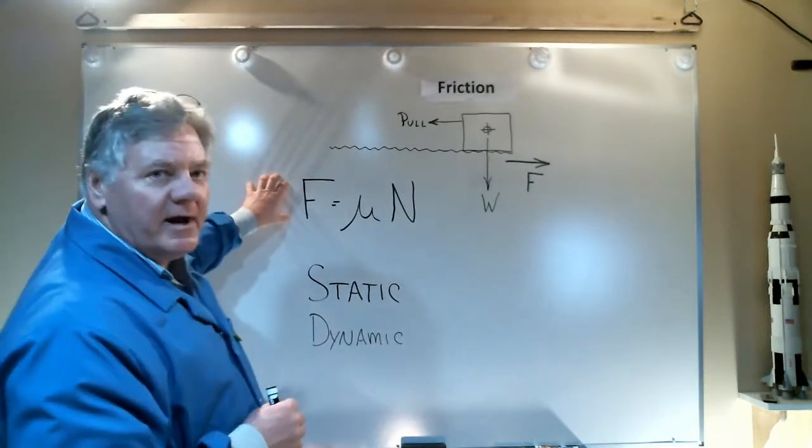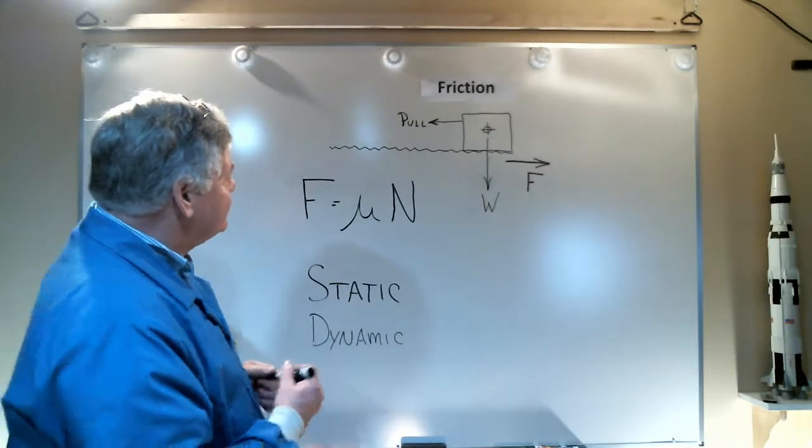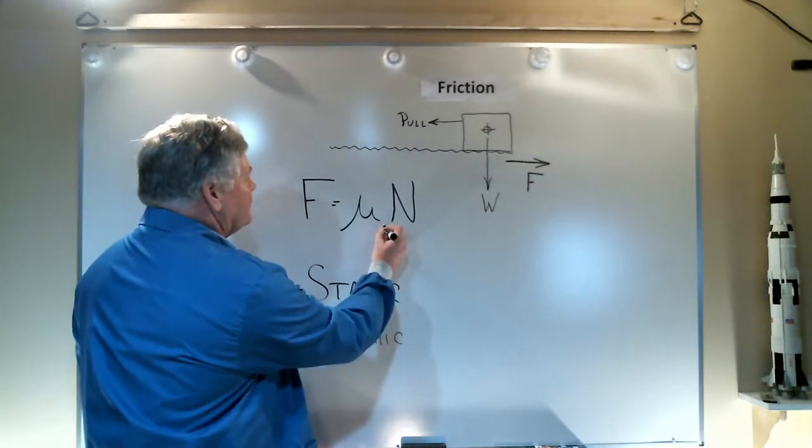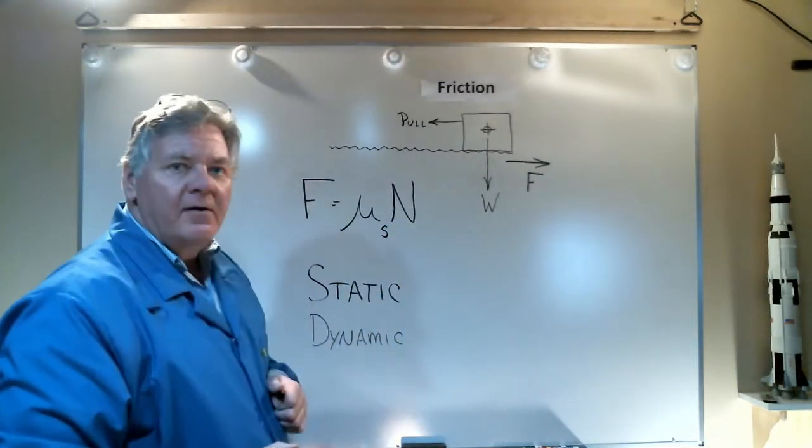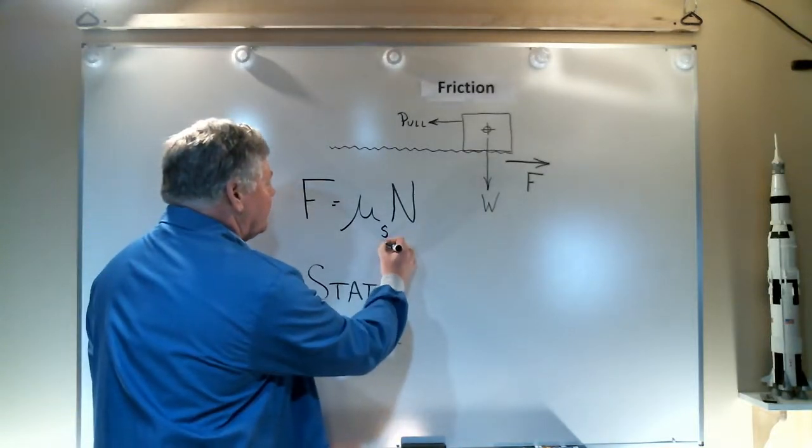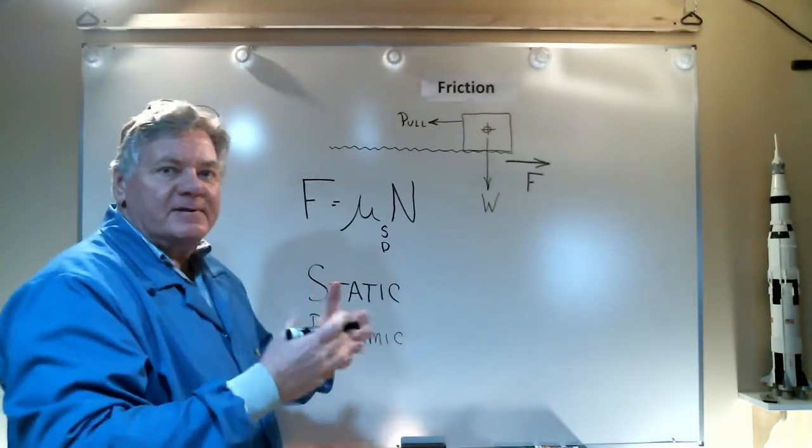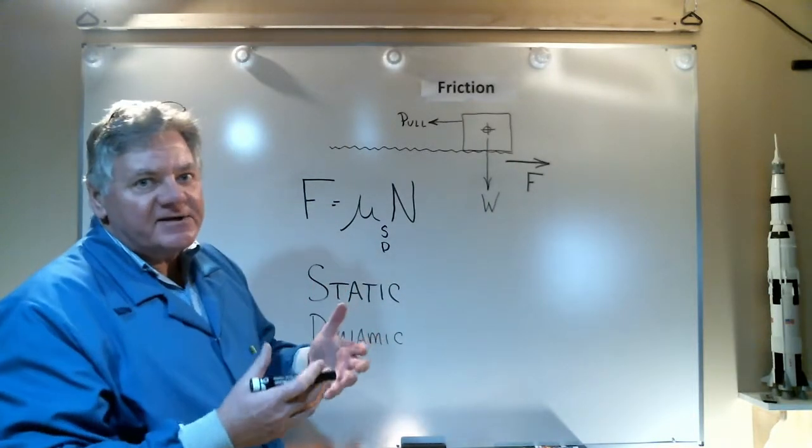The same equation is used for both static and dynamic friction. The only difference is I either use a coefficient of static friction denoted by S, or a coefficient of dynamic friction denoted by D. Depending on the experimental setup determines whether you're determining the static friction or the dynamic friction.